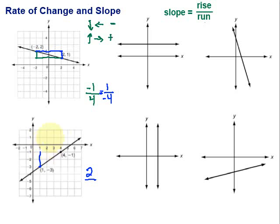And then I figure out my run. So how far is it over? We go one, two, three. So my run is three. They're both positive because I went up and to the right. And there's my slope, two-thirds.